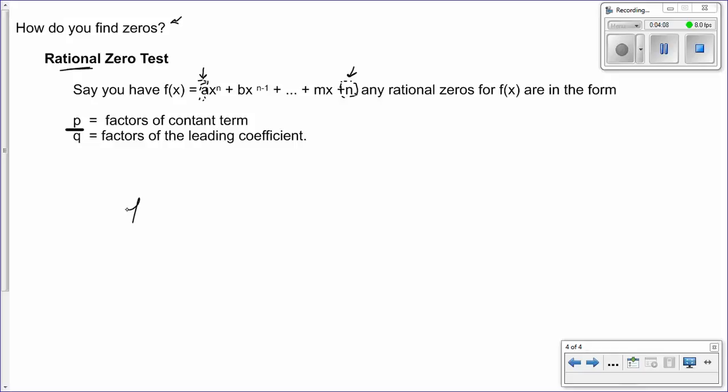So let's look at an example. Say we had f of x equals x to the fourth minus 3x cubed plus x squared minus 3x minus 6. Your p term is your factors of your constant term. So that's going to be your factors of negative 6 over, since there's nothing written here, we know it's an understood 1, so that's going to be your q.